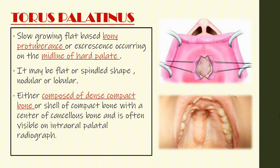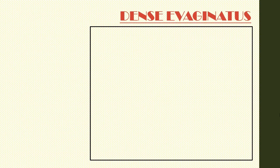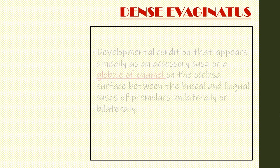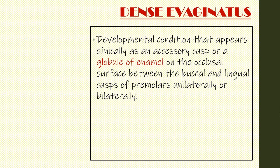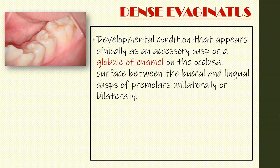It is often visible on intraoral palatal radiographs. The dens evaginatus is a developmental condition that appears clinically as an accessory cusp or a globule of enamel on the occlusal surface between the buccal and lingual cusps of premolars, unilaterally or bilaterally.